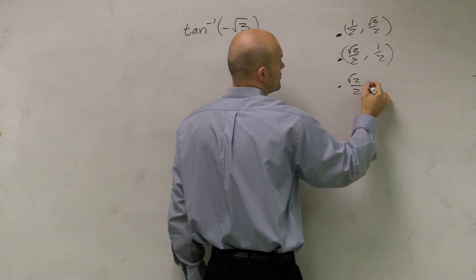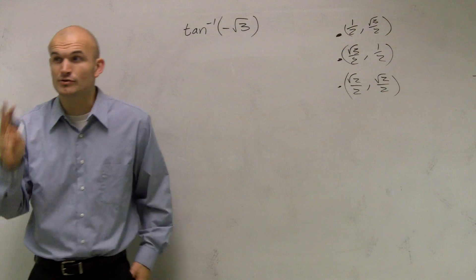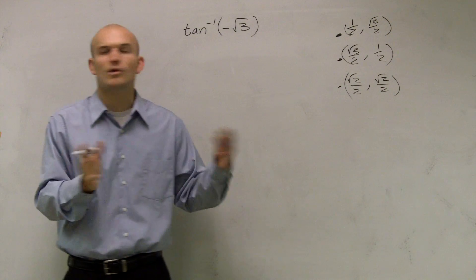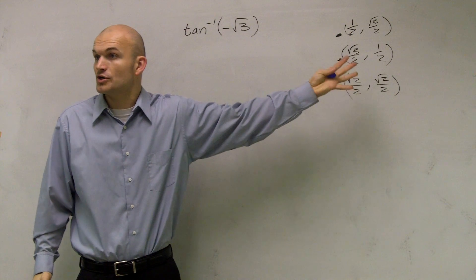And then we have radical 2 over 2, comma, radical 2 over 2. Those are kind of our three unique points, besides our 0 and our 1 and stuff. But those are our three points that we've been dealing most commonly with on our unit circle.